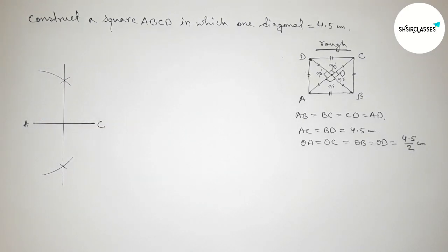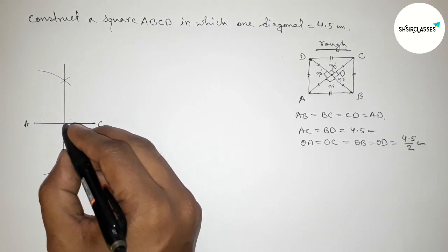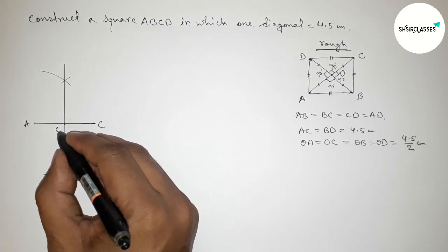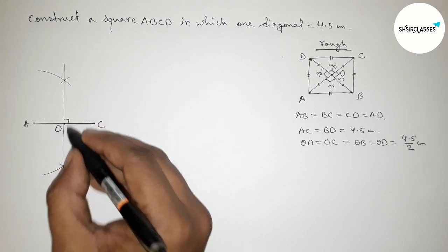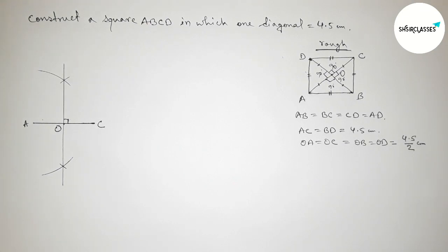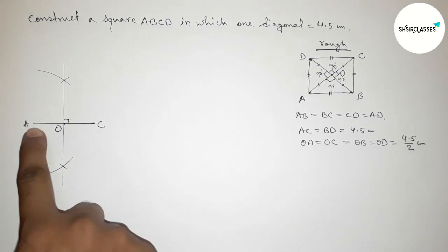So here both the lines bisect here at the point O and this is 90 degrees all time. Next checking this.